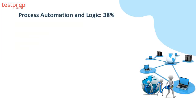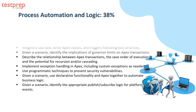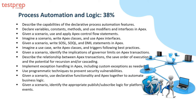Domain 3 is Process Automation and Logic, which comprises 38% weightage in the exam — the largest domain. This covers 12 areas, including: describing the capabilities of declarative process automation features; declaring variables, constants, methods, and using modifiers and interfaces in Apex; given a scenario, use and apply Apex control flow statements; write Apex classes and use Apex interfaces; and given a scenario, write SOSL, SOQL, and DML statements in Apex.